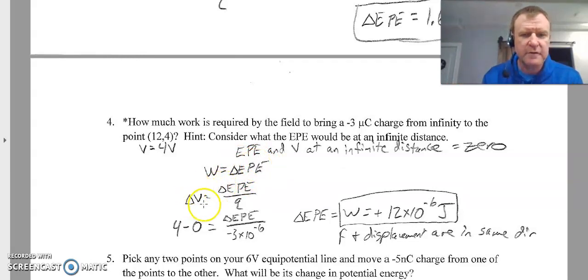Potential difference equals change in energy per charge. Again, we're going from 0 to 4 volts. There's my charge. So I get a negative change in potential energy, meaning this charge is going to lose potential energy. But because the field is drawing that charge in, the force and the displacement are in the same direction. That's why it's a positive value for the work. Not a huge concept in this unit, but remember how we define positive versus negative work. If force and displacement are in the same direction, the work done is positive. If the force and displacement are opposite directions, the work done is negative. So there we have the positive work.